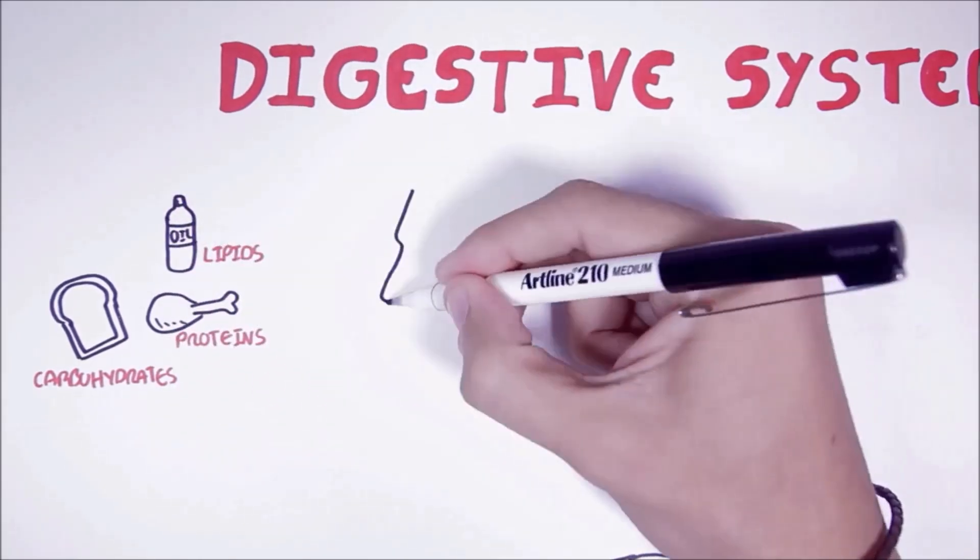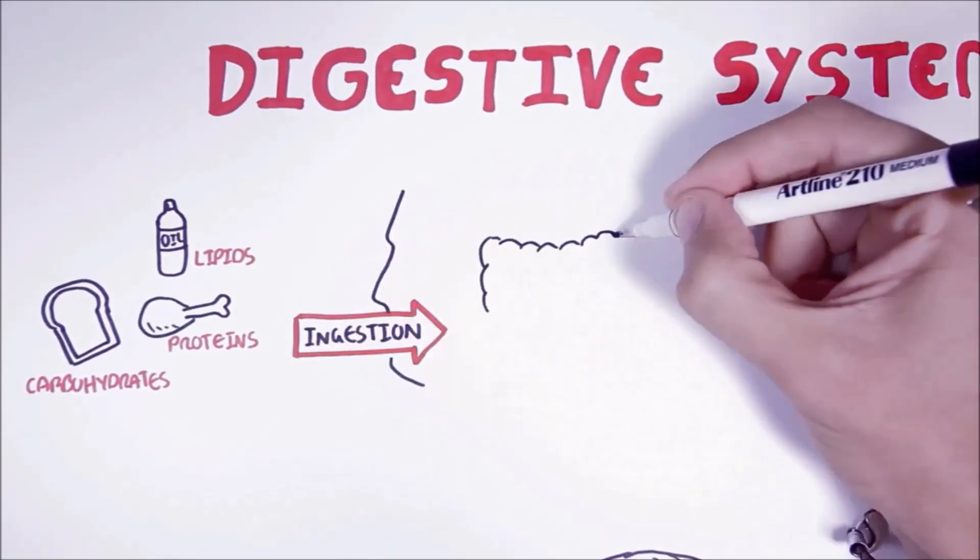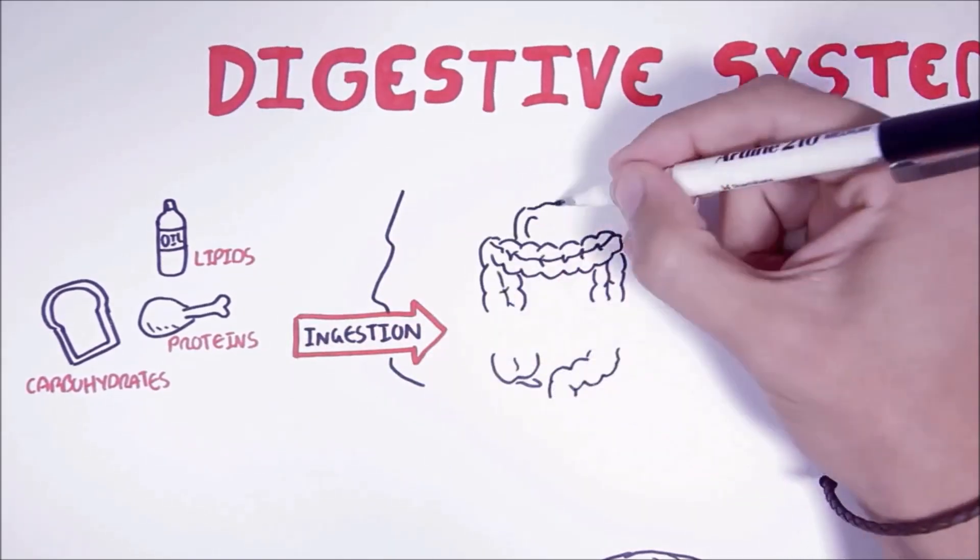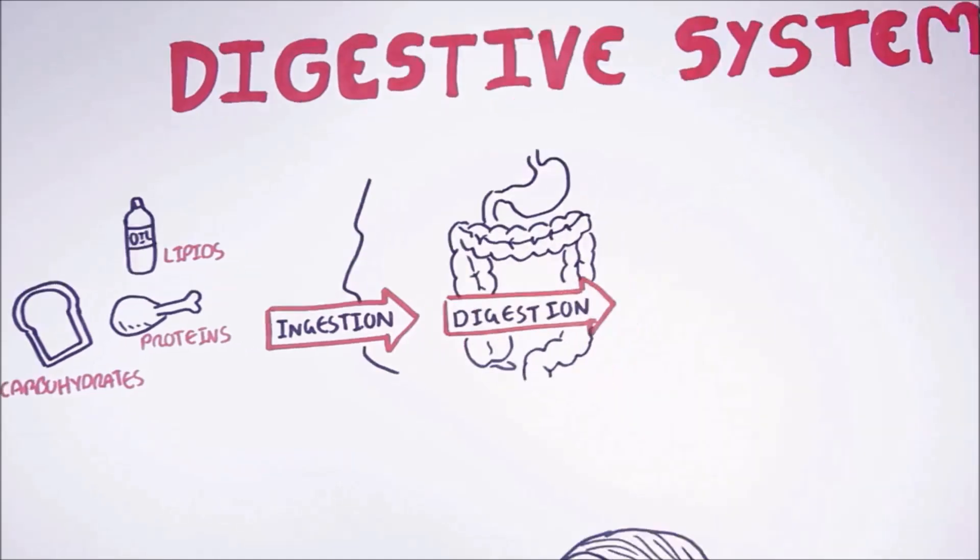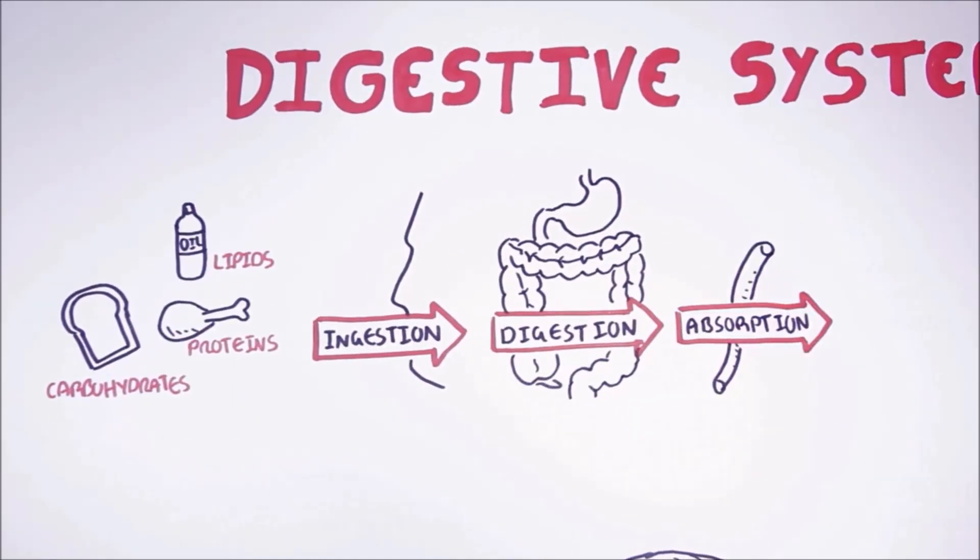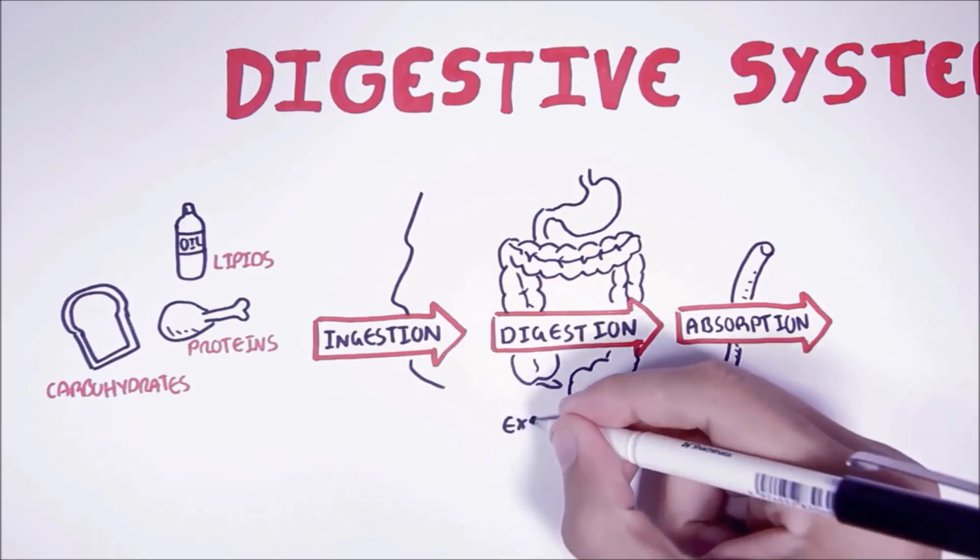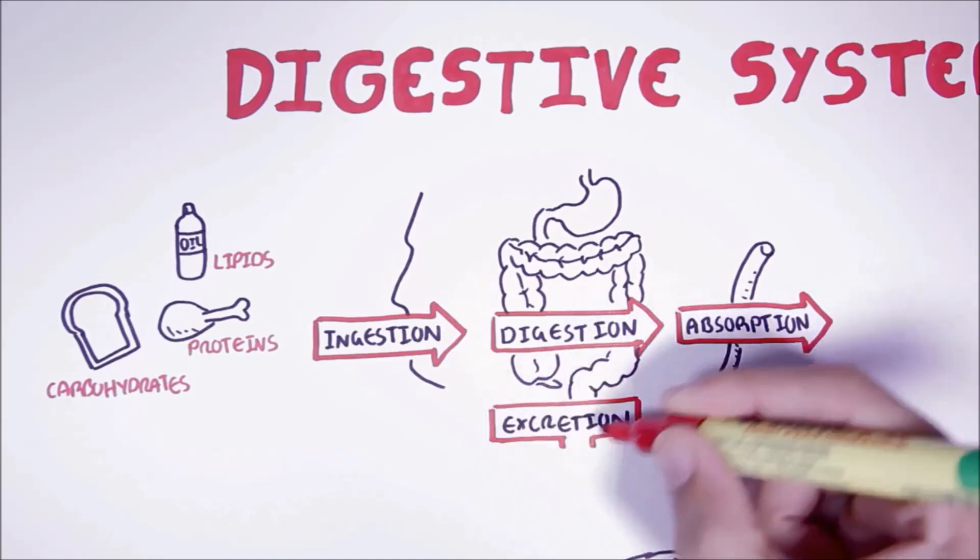These foods are ingested by the human. The food will be digested by the digestive system and then absorbed into the bloodstream, where it will be delivered to body tissues as energy or for storage. Finally, waste is excreted.